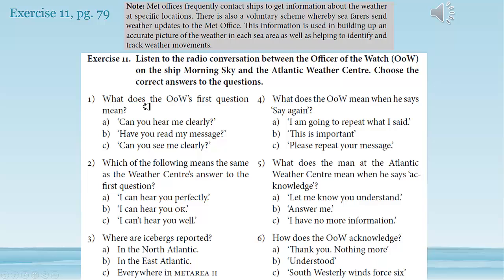As you listen, you're going to answer these questions. What does the OOW's first question mean — can you hear me clearly, have you read my message, or can you see me clearly? Two: which of the following means the same as the Weather Center's answer to the first question? Three: where are icebergs reported — the North Atlantic, East Atlantic, or everywhere in Met Area 2? Four: what does the OOW mean when he says 'say again'? Five: what does the man at the Atlantic Weather Center mean when he says 'acknowledge'? And six: how does the OOW acknowledge?